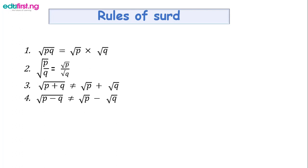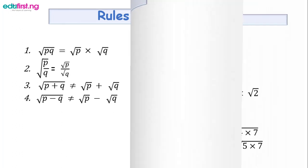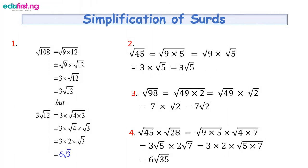Now let us look at simplification of surds. The first example is root 108. What you do is find two numbers that when multiplied give 108, where one is a perfect square and the other is not. For 108, we use 9 multiplying 12 — 9 is a perfect square while 12 is not. Using our rule, we can separate them: root 9 multiplied by root 12.